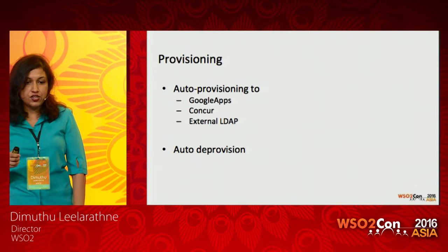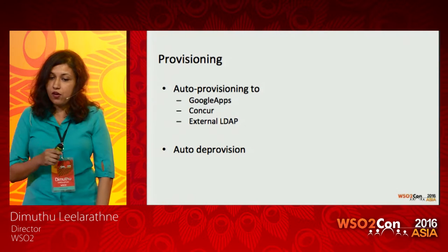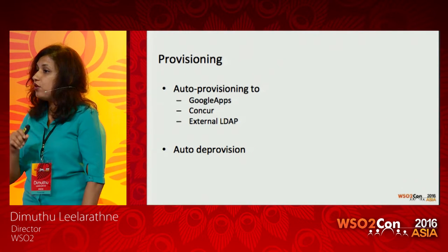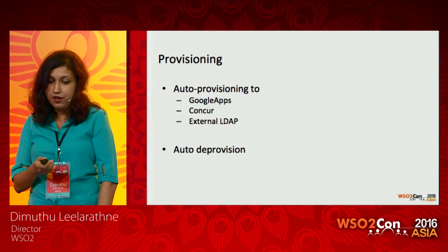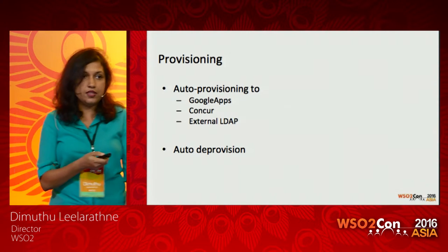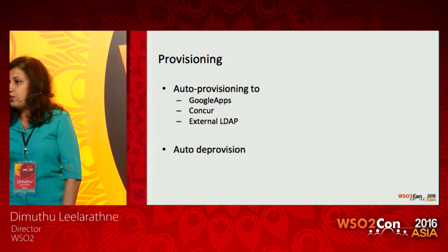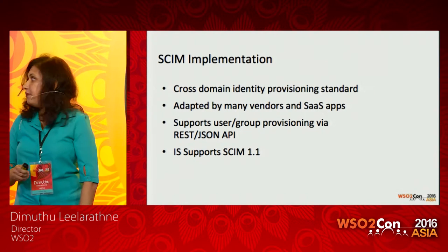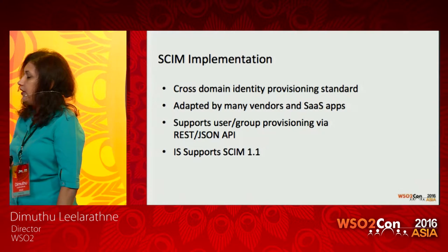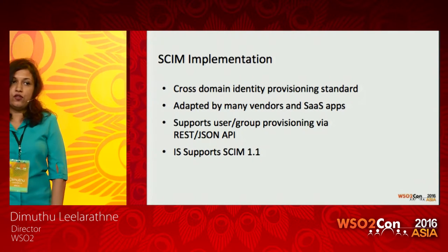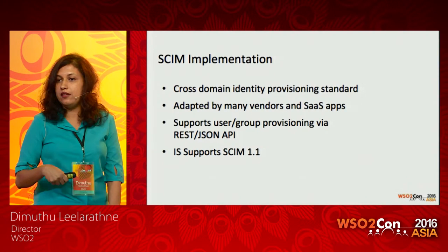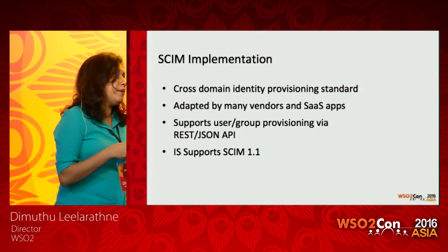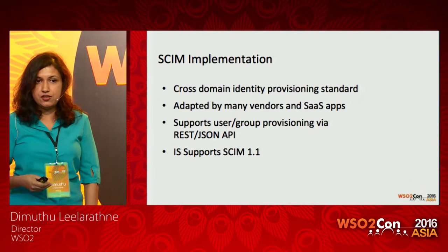In comes the challenge of user provisioning. We wanted to auto-provision users to Google Apps, Conquer, and external LDAP, and also auto-deprovision users. Support Jira reads groups from the external LDAP. SCIM is another important piece — it's a standard for user provisioning, a well-defined REST API with JSON message format, implemented by many service providers and SaaS applications. It's used for cross-domain identity provisioning.